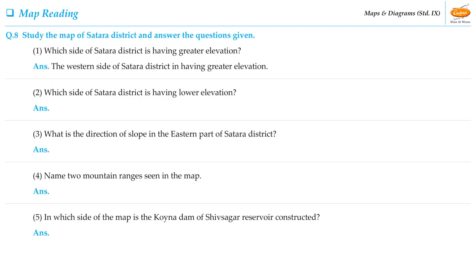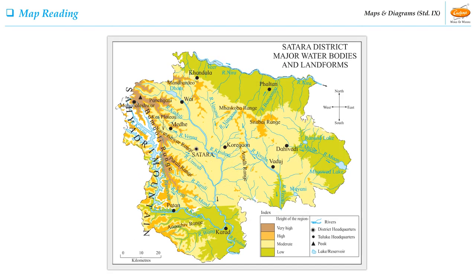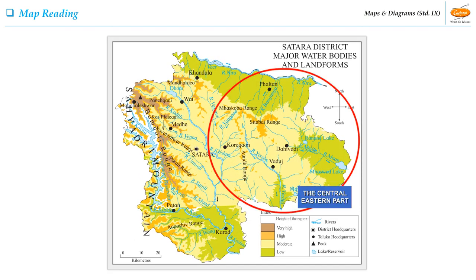Let us now see the second question of this activity: Which side of Saatara district is having lower elevation? As you can see on the map, the central and eastern parts of the district are comparatively of lower and medium elevation.